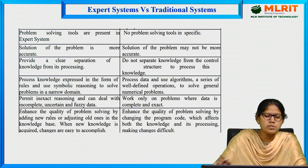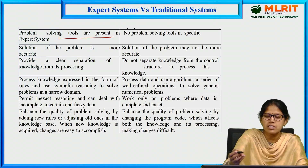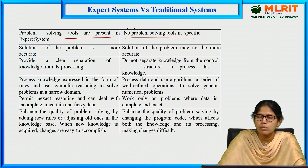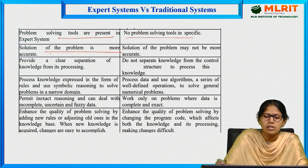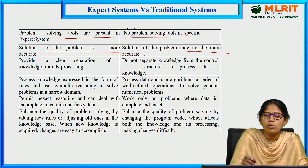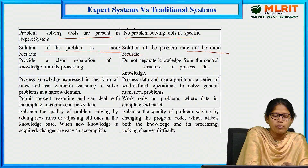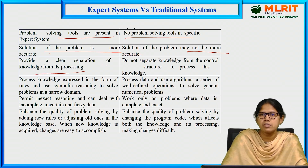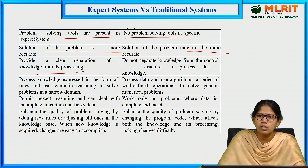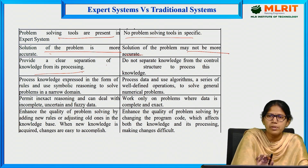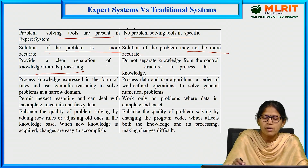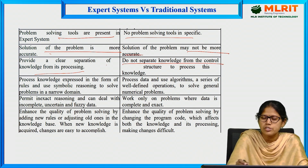In problem solving, tools are present in expert systems, but traditional systems have no specific problem-solving tools. The solution of the problem is more accurate in expert systems, whereas traditional systems may not be as accurate. Expert systems also provide a clear separation of knowledge from its processing, making clear what kind of knowledge is used and what procedure is followed. Traditional systems do not separate knowledge from the control structure.